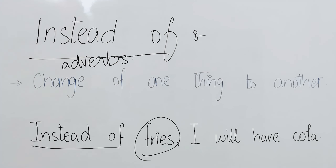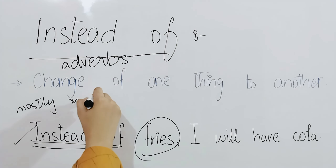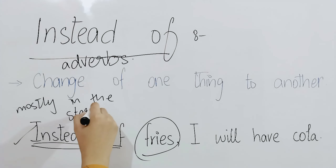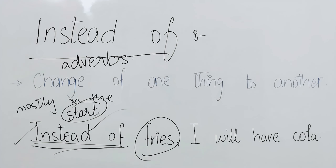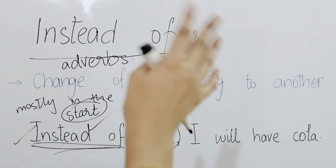I hope instead of is clear and you understood how to use it with examples. One very important point to note is that instead of mostly comes at the start of the sentence. As you can see in our examples: 'Instead of buying a new car...' and 'Instead of going out for dinner, we decided to cook dinner at home.' Instead of is mostly used at the beginning of sentences.